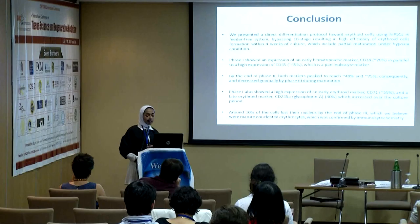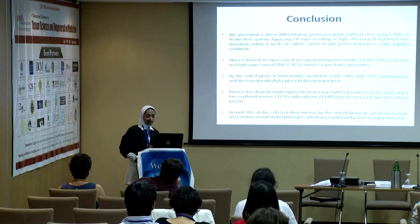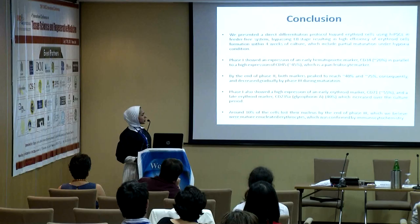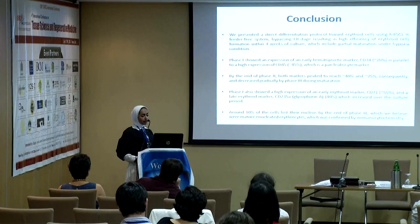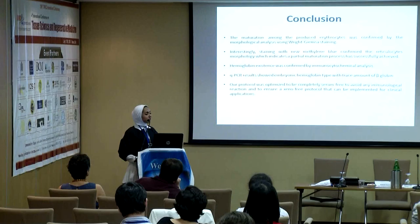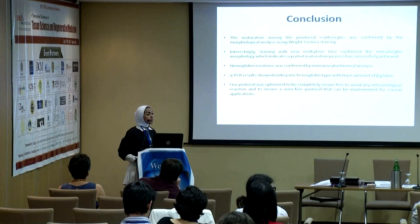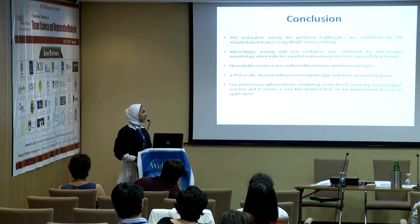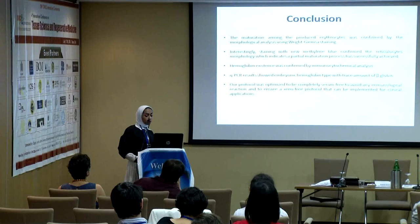Phase one also showed signals of early and late erythroid markers CD71 and glycophorin A, both increasing throughout the differentiation protocol. Also, 10% of the whole population by the end of phase three — by day 28 — were already enucleated, which is the main feature of mature erythrocytes. Maturation was confirmed by Giemsa staining and reticulocyte staining. Hemoglobin presence was confirmed and was mainly of embryonic type. Our protocol was optimized to be completely serum-free to avoid any immunological reaction, so it can be suitable for clinical application, hopefully in the future.